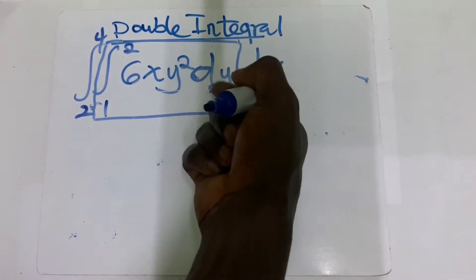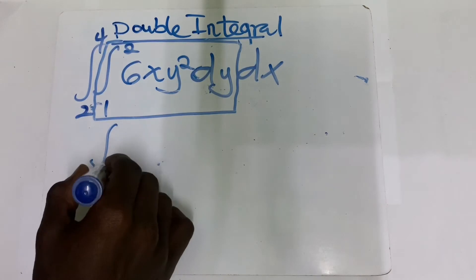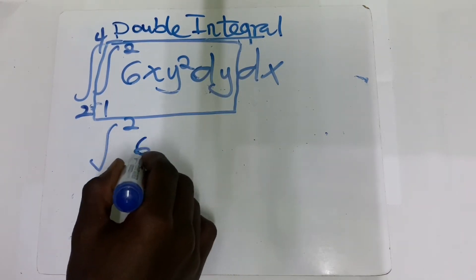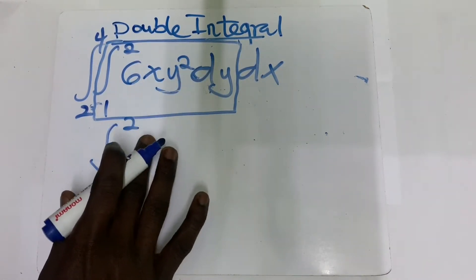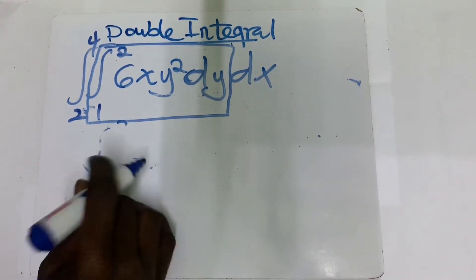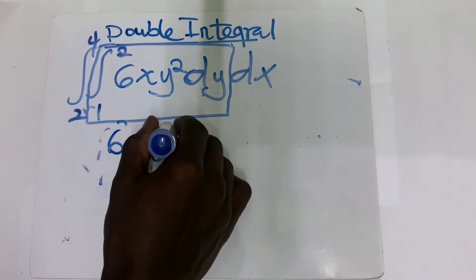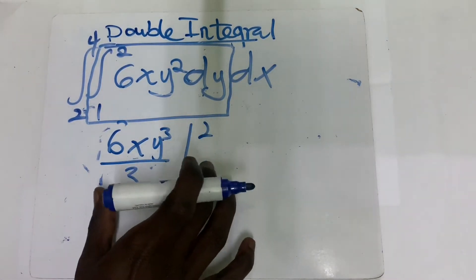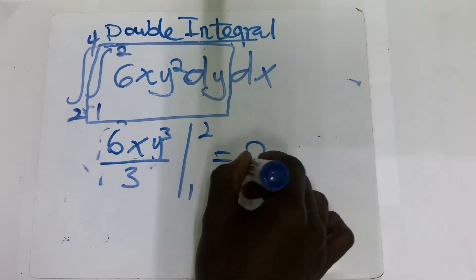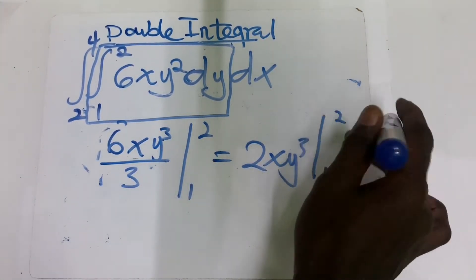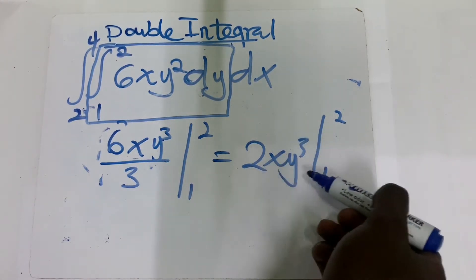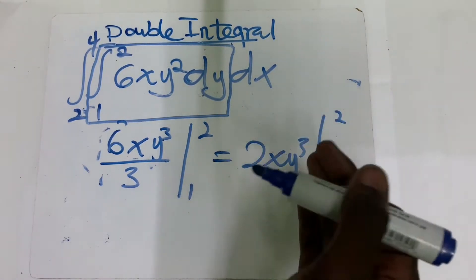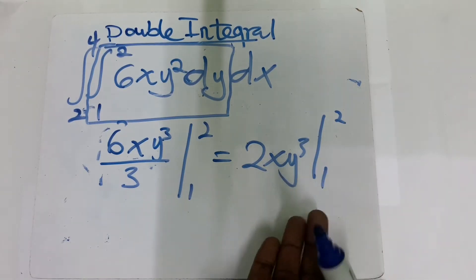We integrate partially with respect to y. When you integrate 6xy², you add 1 to the power to get 6xy³ all over 3, which simplifies to 2xy³. Then you evaluate from y = 1 to y = 2. You put the value 2 inside minus the value at 1, and you get a result that you then use to solve for x.